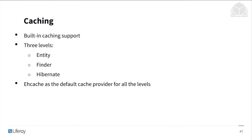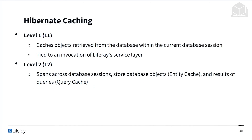We also have caching — there is built-in caching support with service builder. There are three levels: entity-level caching, finder-level caching, and Hibernate, or the database level. Ehcache is the default cache provider for all levels. For Hibernate caching, there are two levels: Level 1 caches objects retrieved from the database within the current database session, tied to an invocation of the Liferay service layer. Level 2 spans across database sessions and stores database objects, covering the entity cache and query cache.